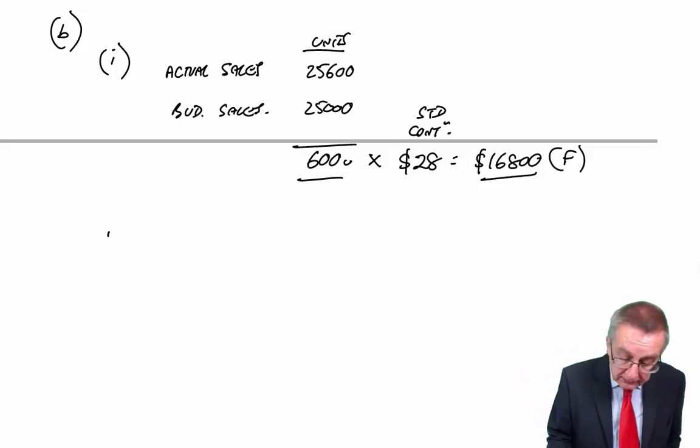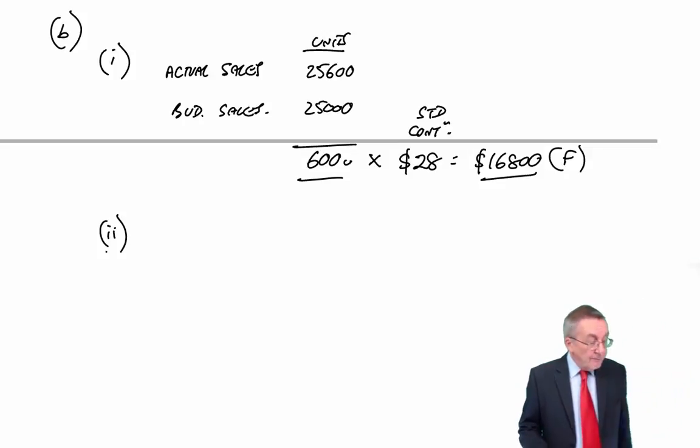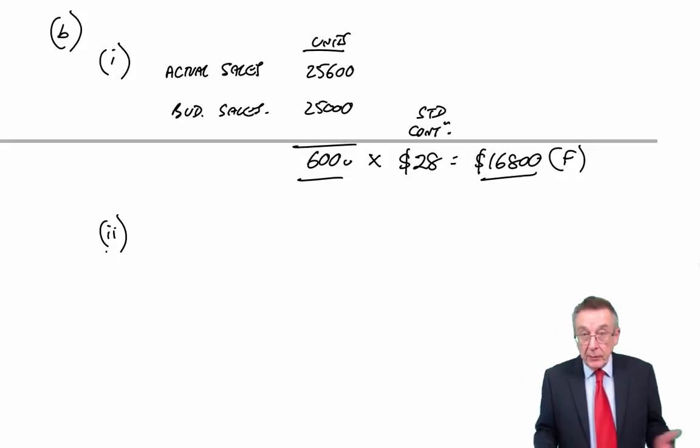And so the sales volume variance, 600 times $28, is $16,800. I've already said it's favourable. We sold more than we expected.